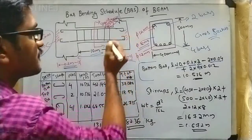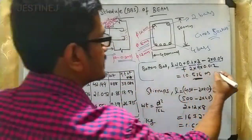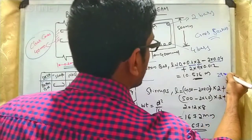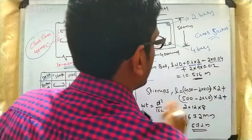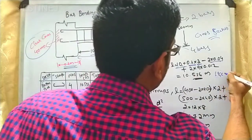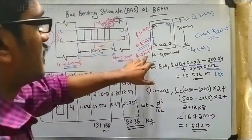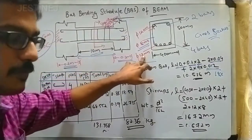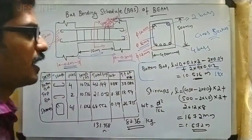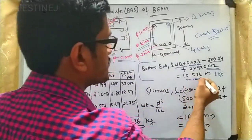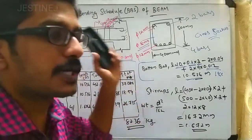There is a hook at both ends, so you have to add those as well. The general equation for hooks is 2 multiplied by 9d, that is 18d. Since the diameter is 12 mm, you consider 0.012 meters. Adding up all these values — 10 + 0.2×2 - 2×0.04 + 18×0.012 — you will get 10.536 meters.